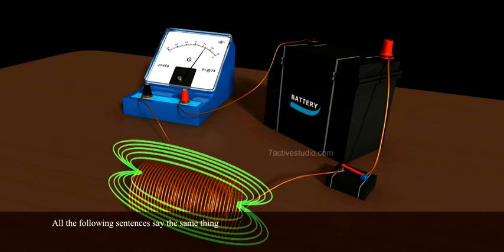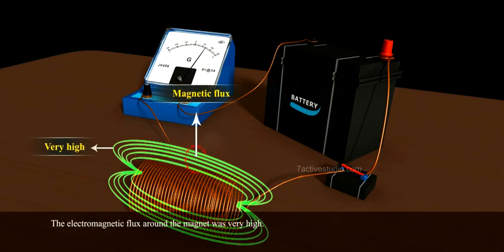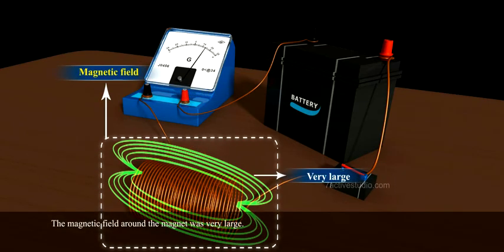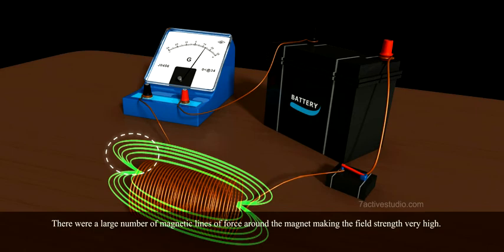All the following sentences say the same thing. The electromagnetic flux around the magnet was very high. The magnetic field around the magnet was very large. There were a large number of magnetic lines of force around the magnet, making the field strength very high.